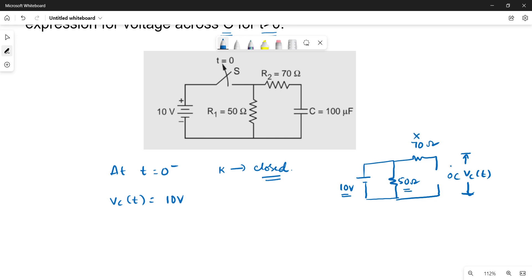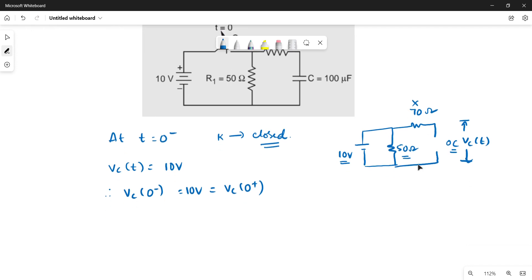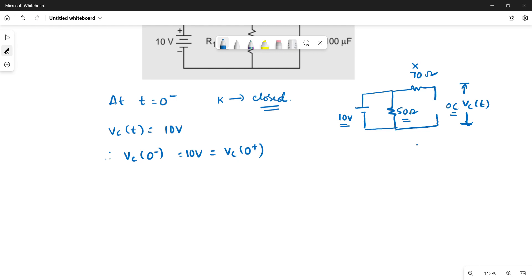Because of the capacitor nature, sudden changes in voltage is not allowed. So at zero plus also it will be 10 volts, which we can assume.